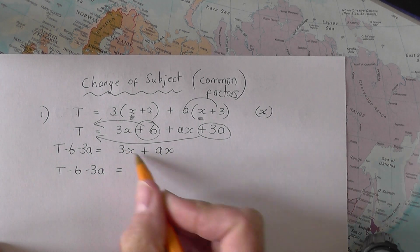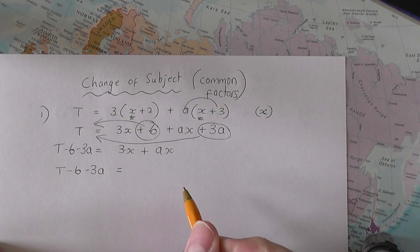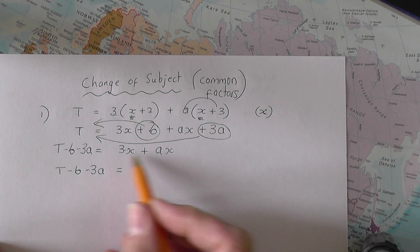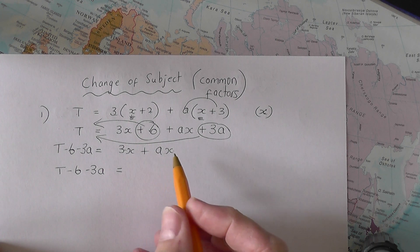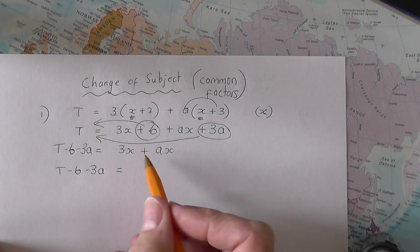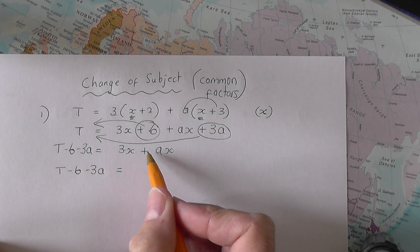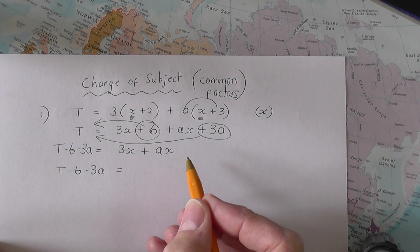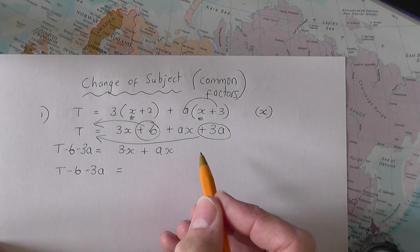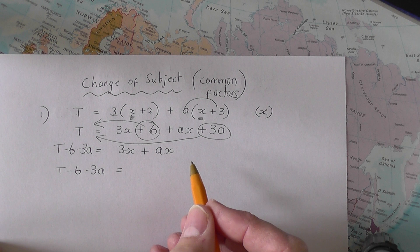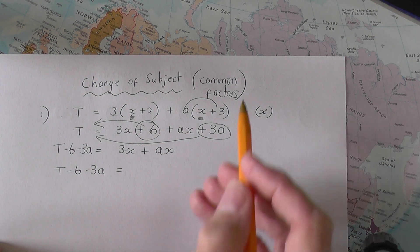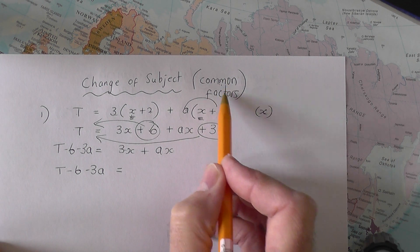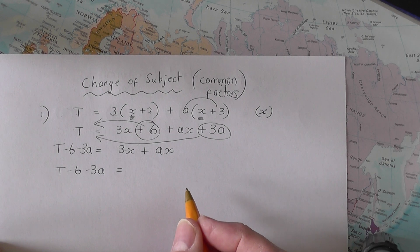Equals. And on the right hand side we need to add together these two X terms. Now in the past when we've done this type of question with common factor, what we've done is we've said this. We've said we've got three X's and we've got AX's. So in total we've got three plus A X's. There's nothing wrong with that logic. But I think most people find using common factors is a far easier approach to adopt.